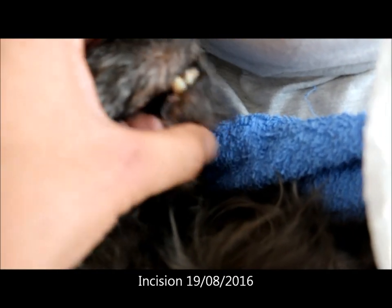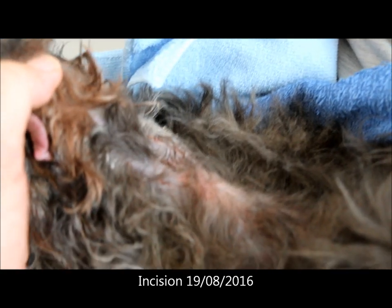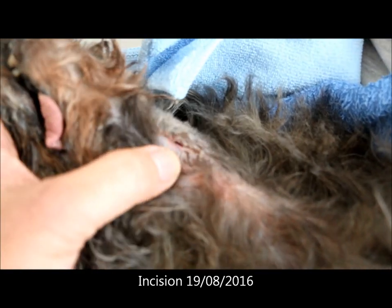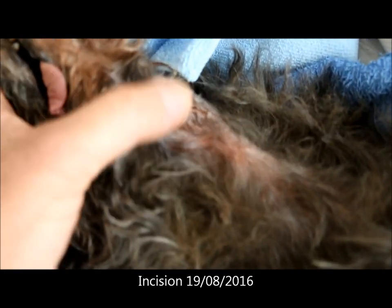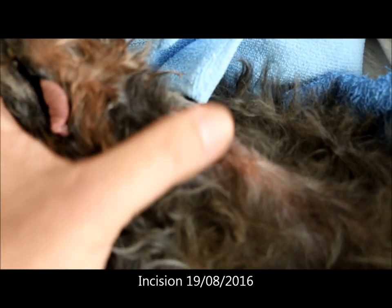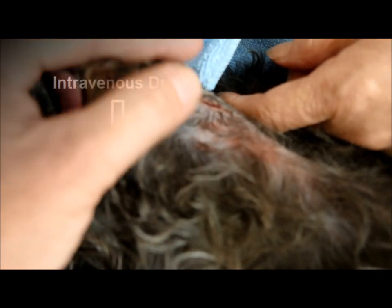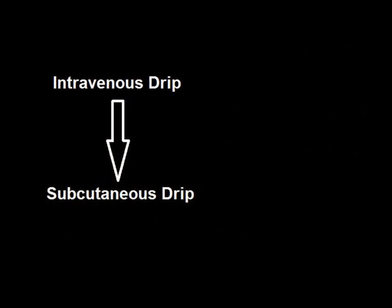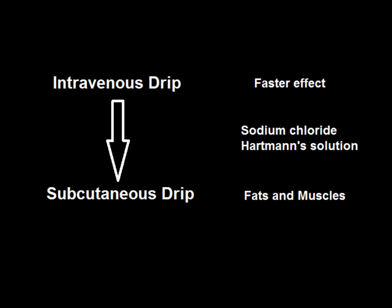Next, let us look at how we treated this dog. First, an incision was made on 19th August 2016 to allow the pus from the neck abscess to be drained out. The dog was then given an intravenous drip followed by a subcutaneous drip. An IV drip was used first as it has a faster effect, not having to pass through fats and muscles. We dripped it with sodium chloride and Hartmann solutions.